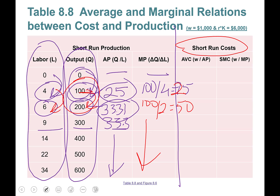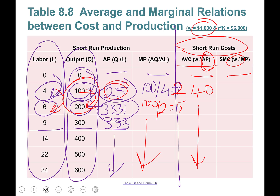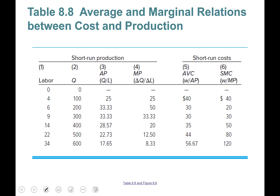For the short run: wage rate is 1000. Average variable cost equals wage rate divided by average product — so 1000 divided by 25 equals 40. Marginal cost equals wage rate divided by marginal product — and with marginal product of 25, that's again 40. You can pause the video and calculate all the remaining values.